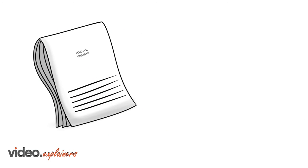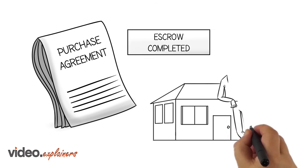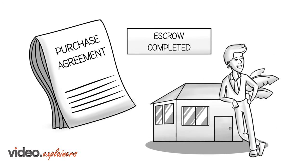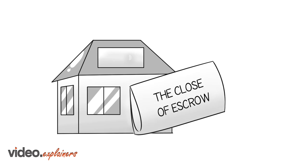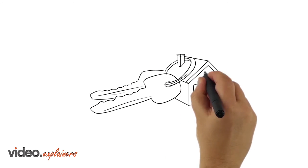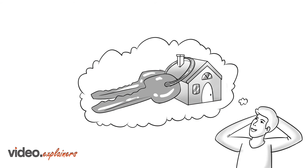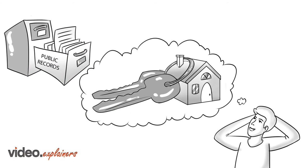When all conditions required in the purchase agreement have been satisfied, escrow will be complete and the transfer of ownership of the property can occur. This is called the close of escrow. Escrow is officially closed when the property is transferred to the buyer and the deed is recorded in the public records of the county.